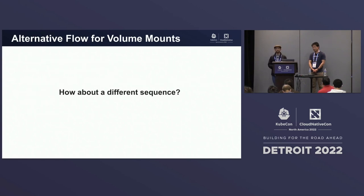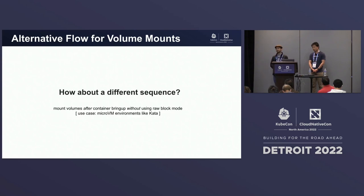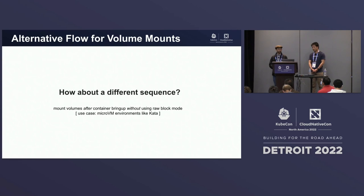While this sequence is very standardized and works across the board, can we have a different sequence? Specifically, how about a model where we decide to mount volumes after the containers are brought up, without using the raw block mode available in Kubernetes today — continuing to use persistent volumes that specify a file system mode? A specific use case of this is micro-VM environments, specifically Kata. To describe this in more detail, I'll switch over to my co-speaker, Feng.